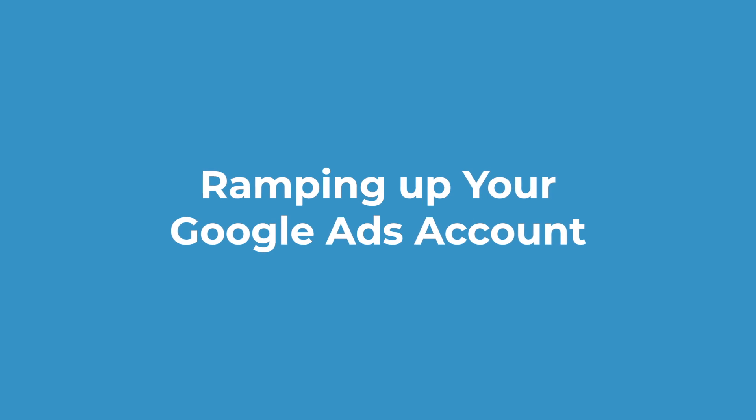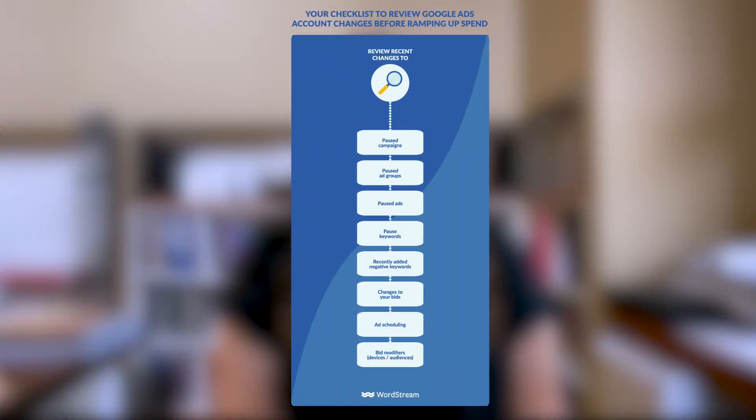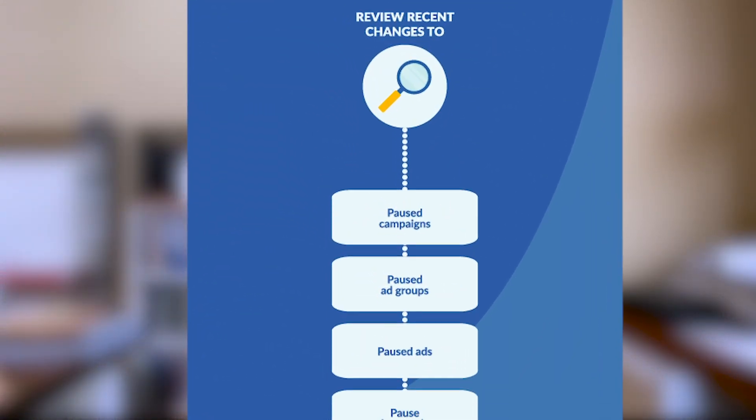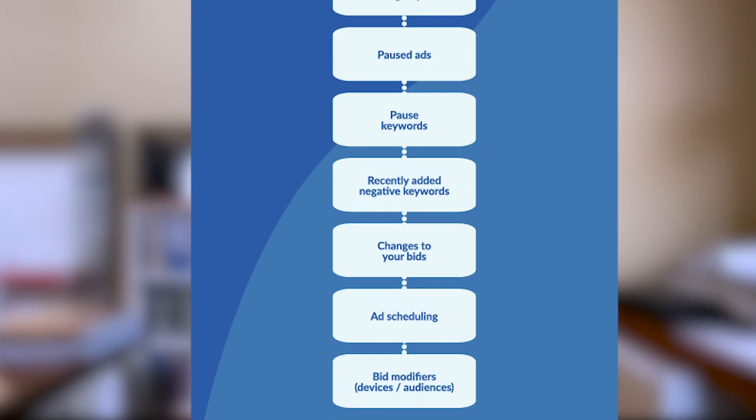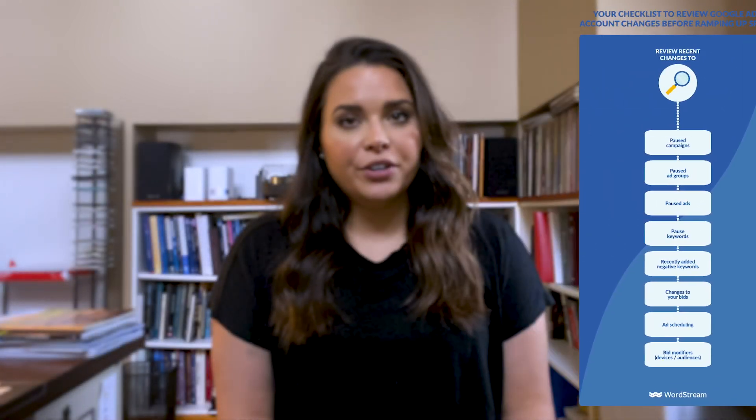Ramp up your Google Ads account. The first thing you need to do is take the time to review any significant changes you've applied to your account during this period. Now is the time when labeling makes your review so much easier. Here's a checklist you can use for this. Now that you've revisited your changes, you should review whether they should be reverted or not. To decide, ask yourself two questions. First, was this change applied because your campaign is limited by budget? If so, you should consider reverting the change to allow for more freedom in ad delivery as your budgets increase.